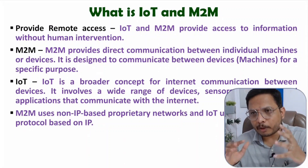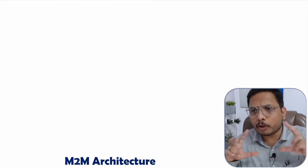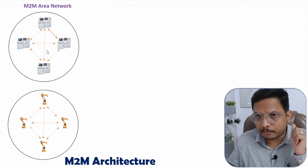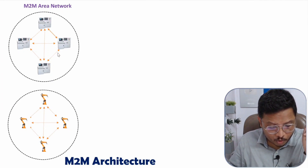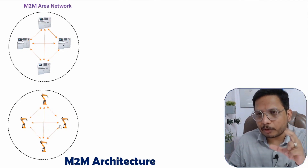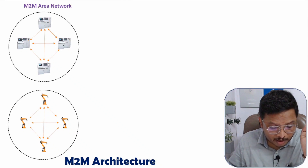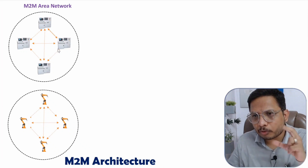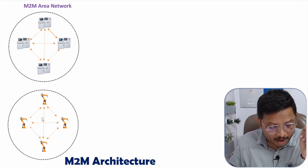Now I am going to explain the M2M architecture as well as its basic building blocks. First, you need to understand what an M2M area network is. In an M2M area network there will be machines interconnected with each other using different types of protocols. The basic interaction between machines is possible through communication protocols such as Bluetooth, ZigBee, Wi-Fi, and NFC. However, one M2M area network device cannot communicate with another M2M area network device directly.